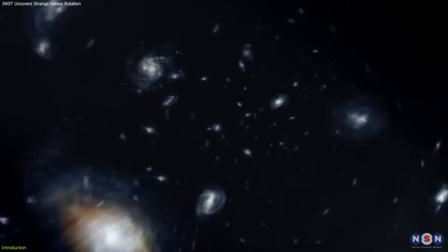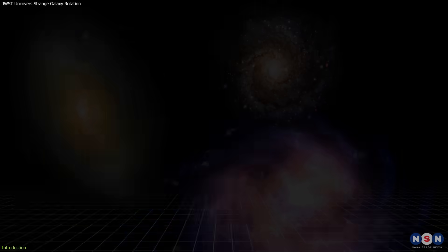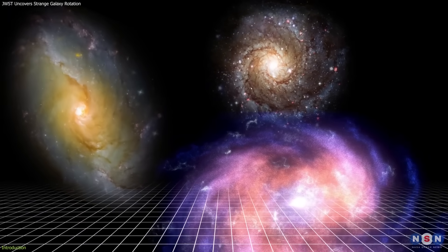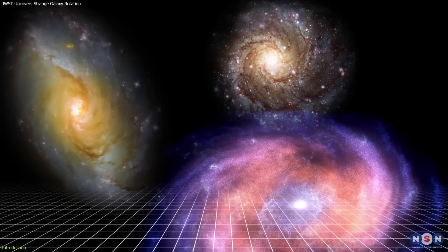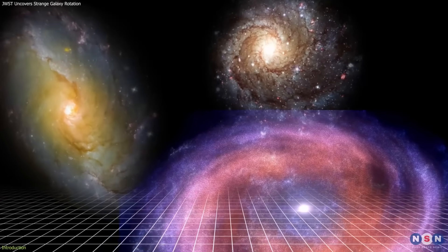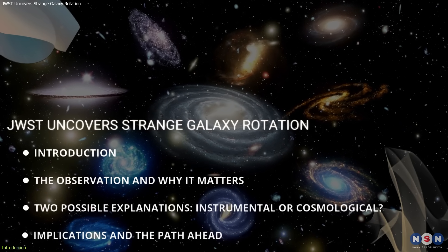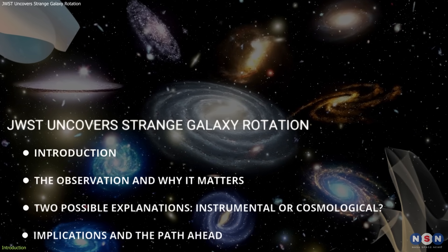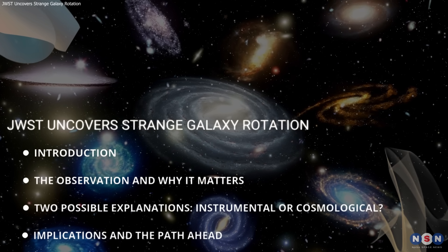In a cosmos where symmetry is a foundational assumption, such alignment in galactic rotation challenges long-held models. It raises a difficult but important question. Are we seeing a subtle artifact of observation, or does this reveal something deeper about the universe's structure?